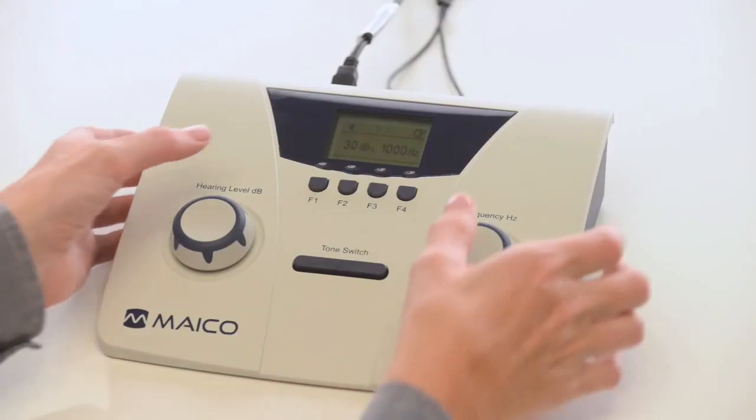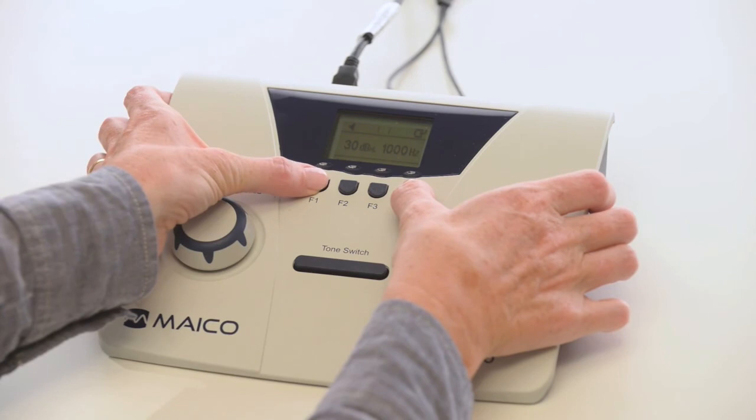To access the settings menu, press F1 and F4 simultaneously. For example, start intensities and frequencies can be adjusted to allow for faster testing times.